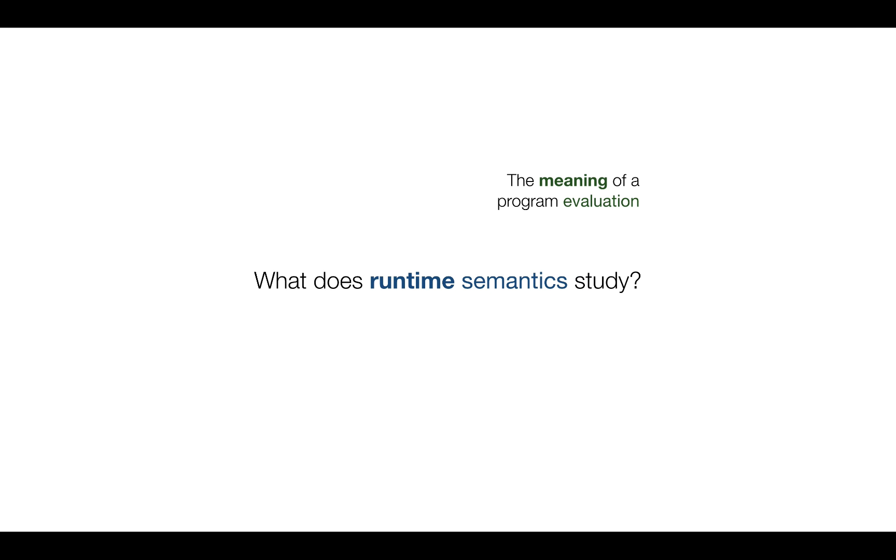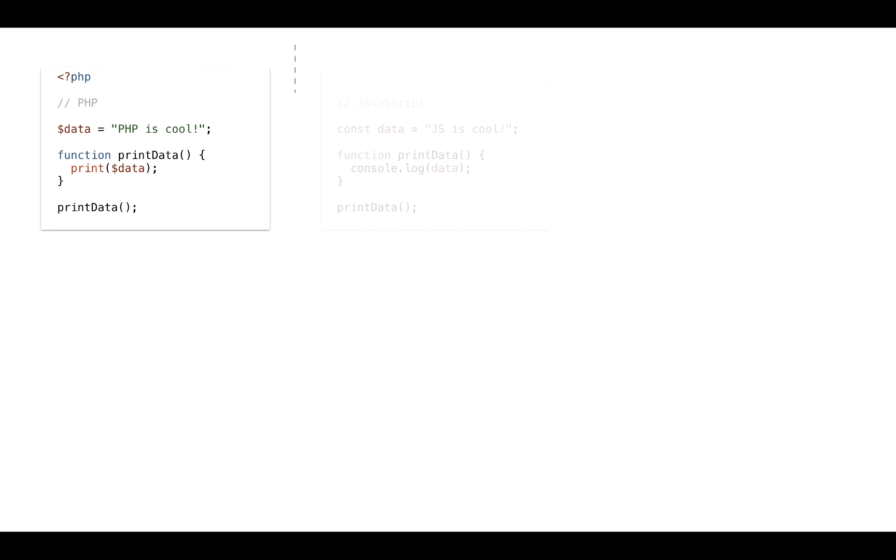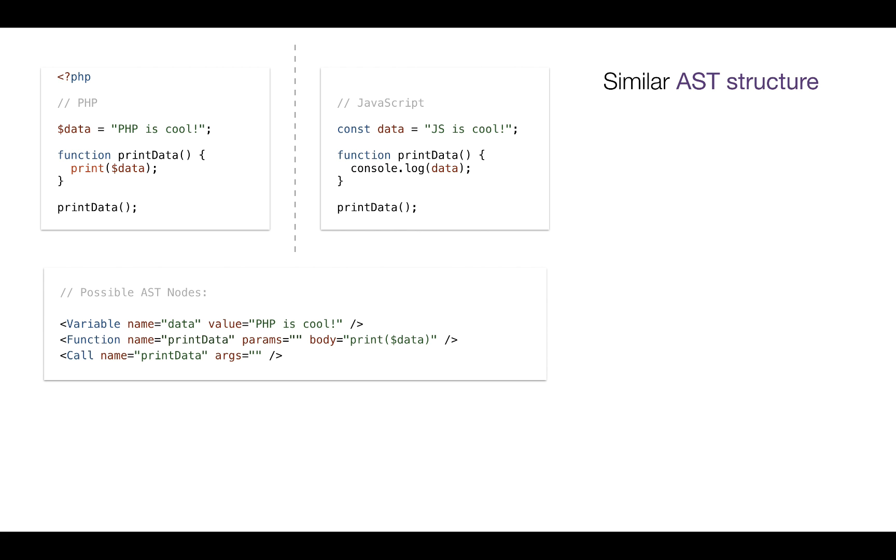So what do we study in this class then? As we said, it's runtime semantics, that is the meaning of your program. Let's take a look at a small example to see what specifically it is. So let's say we have these two small pieces of code. One is written in JavaScript and the other one is written in PHP. And this code might have the same AST structure at static semantic. As we can see, we have an AST node for a variable, for function declaration, and for function call. Exactly the same.